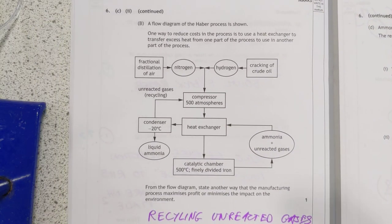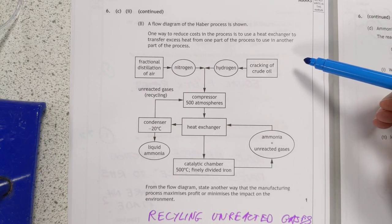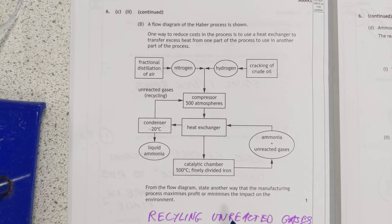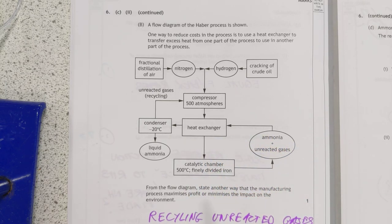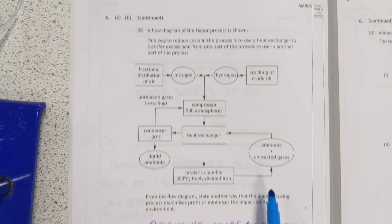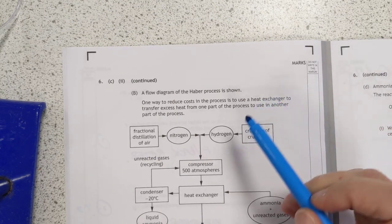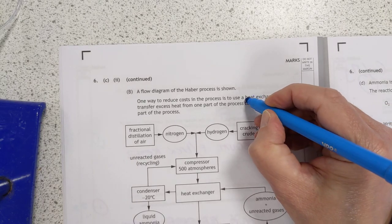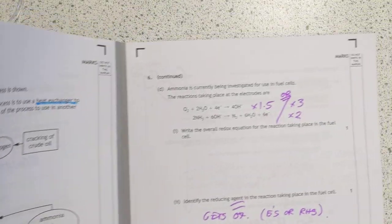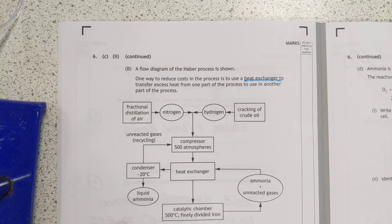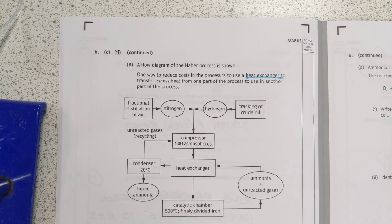Flow chart time. From the flow chart, which I think is completely... From the flow diagram, state another way that the manufacturing process involves maximizing profit. So they have recycled... Read the question here. So one way they're telling you, they're using a heat exchanger. So you've got to find the other way. That's why it's recycling gases. I suppose could you put selling waste products? No, because there are no waste products in this one. So I don't think they'd accept that then.